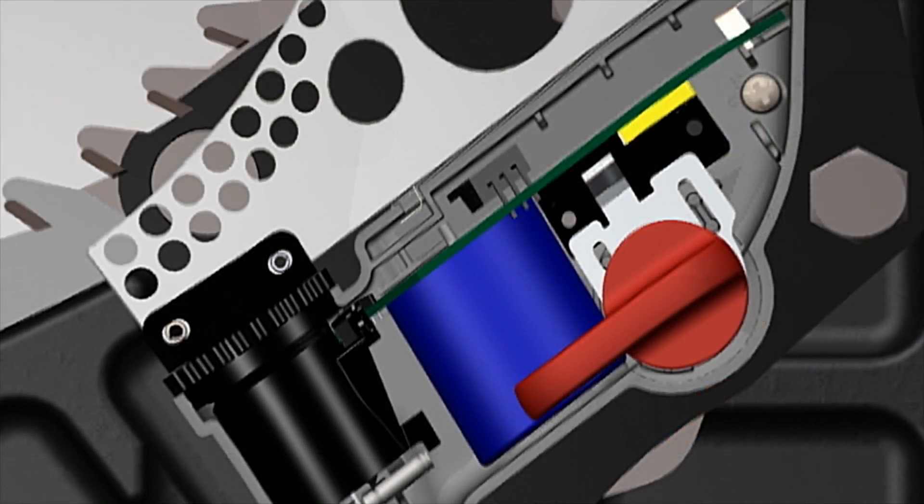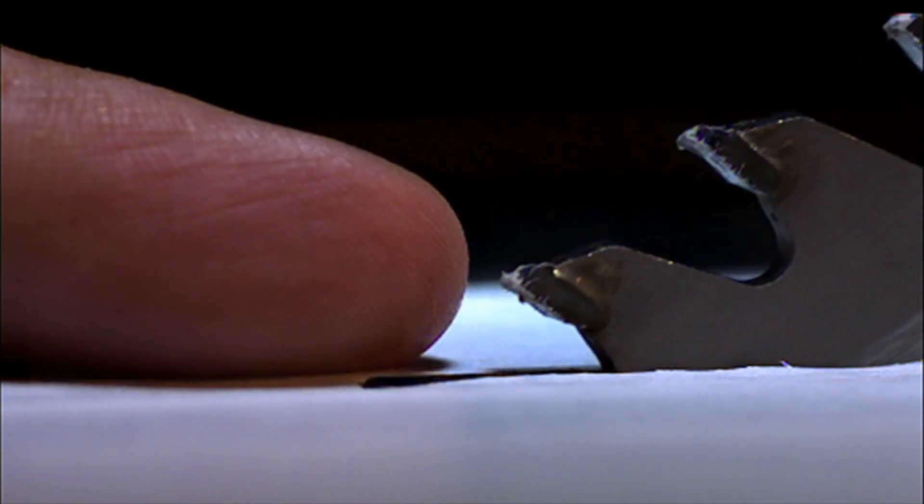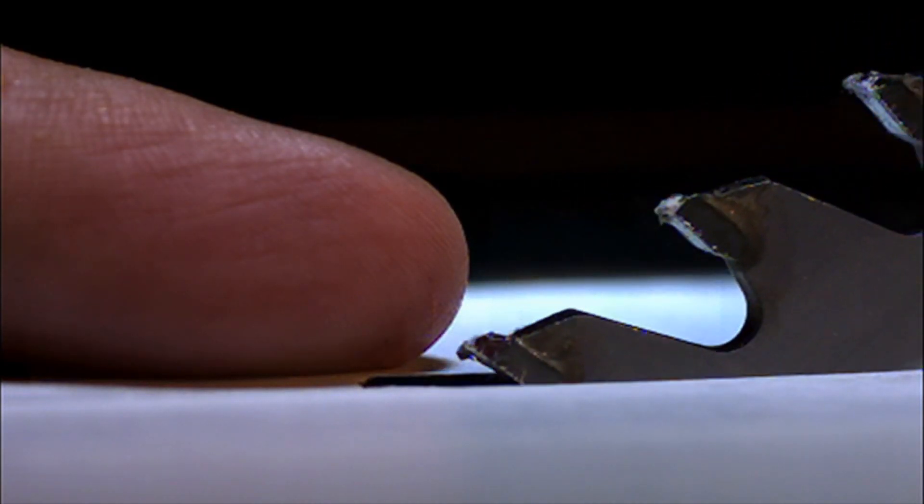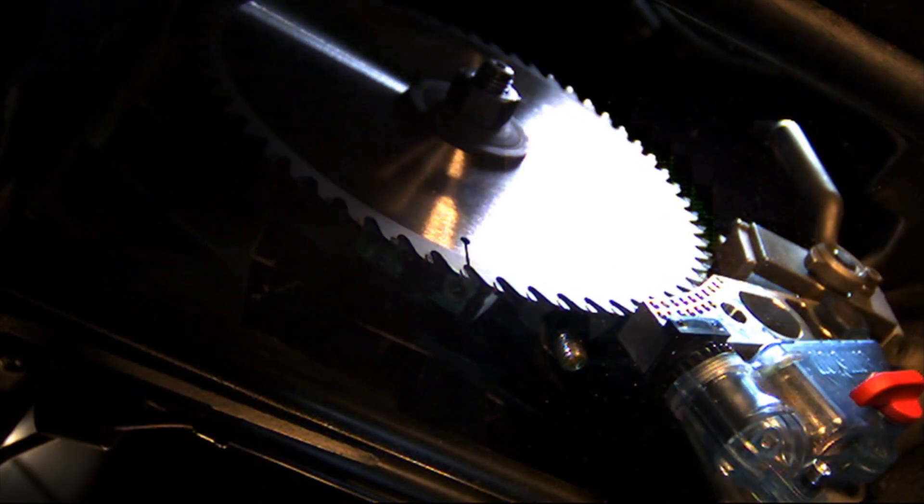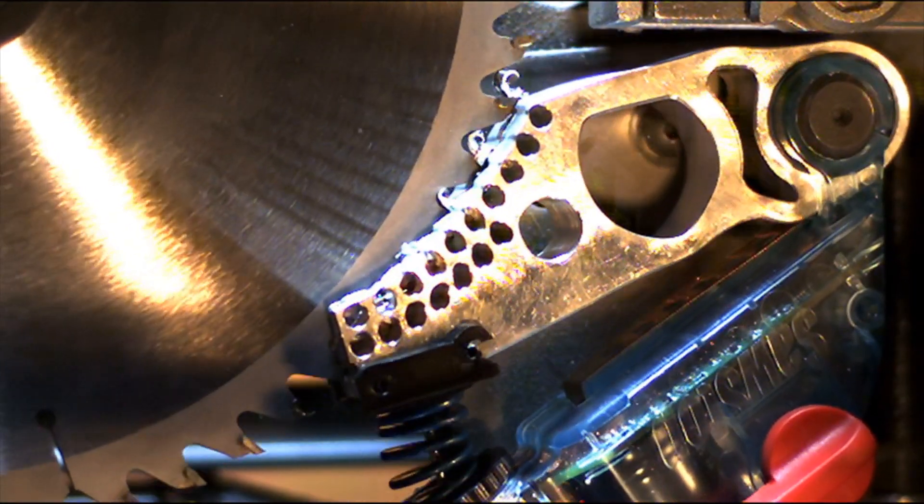When the woodworker touches the blade, their body absorbs that electrical signal. A digital signal processor in the brake cartridge detects the change and triggers the release of a heavy-duty spring, forcing an aluminum brake into the spinning blade.